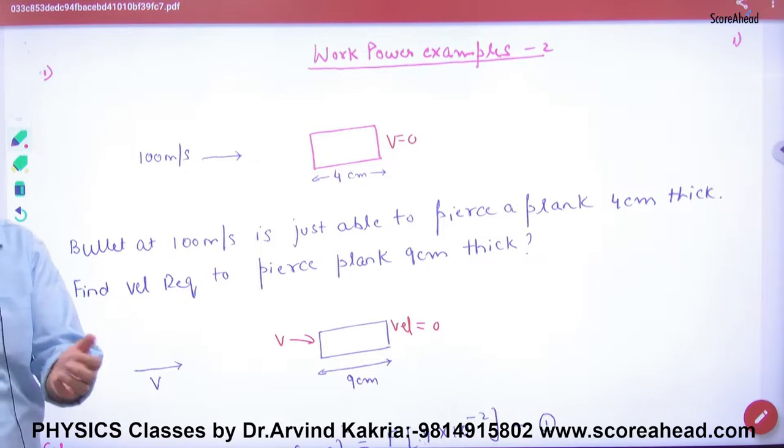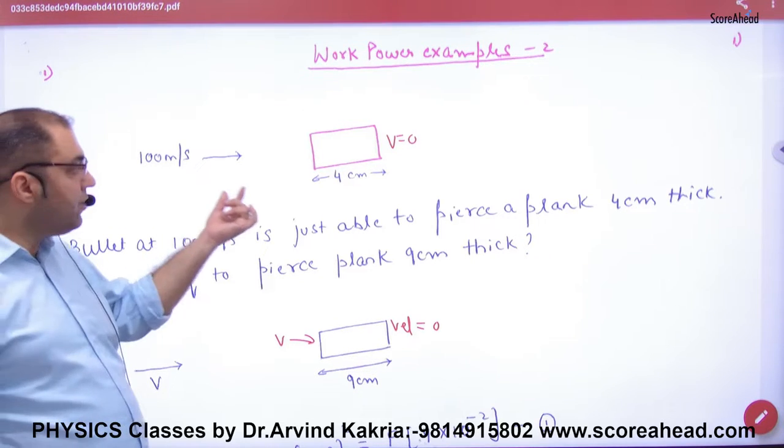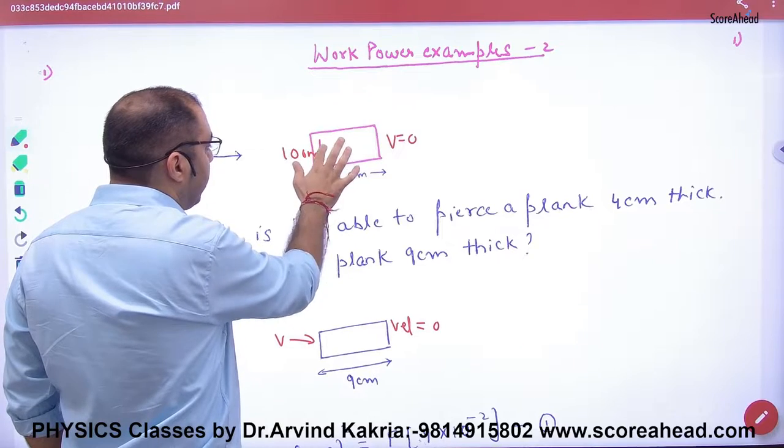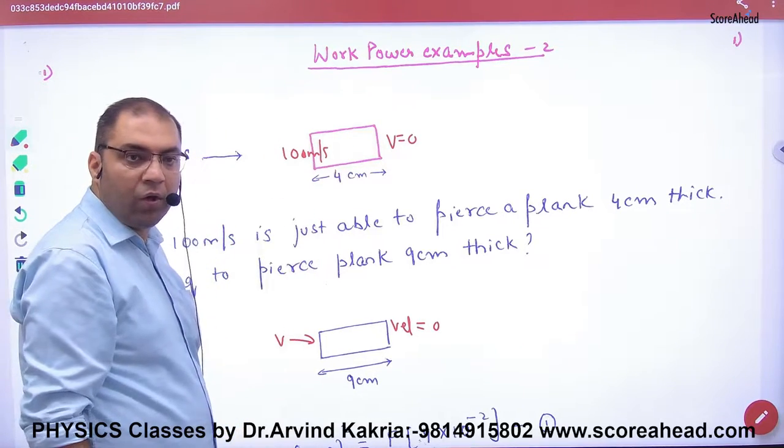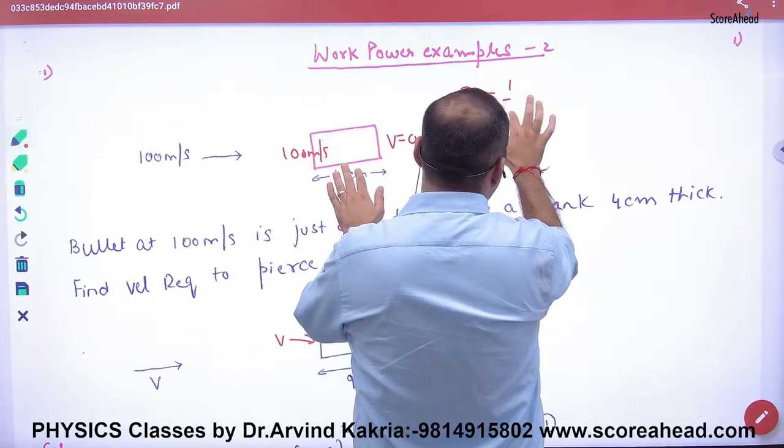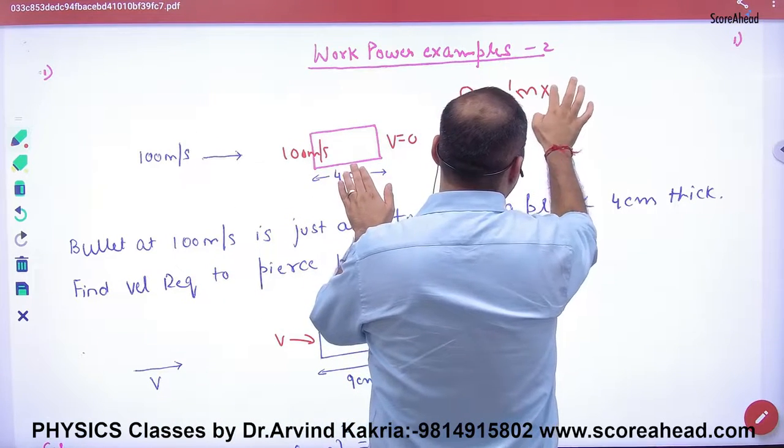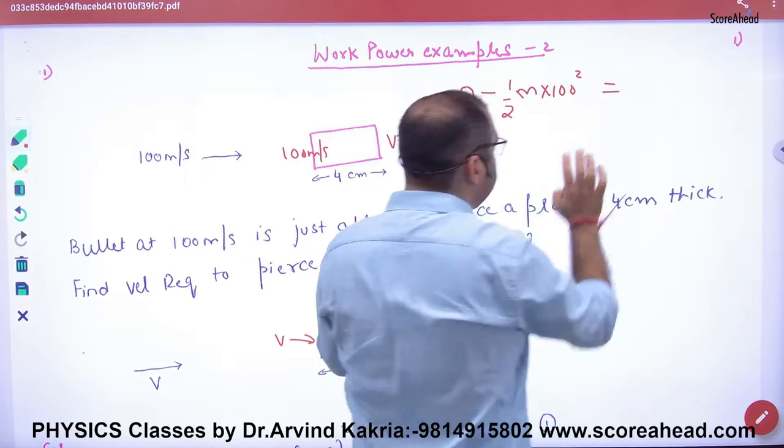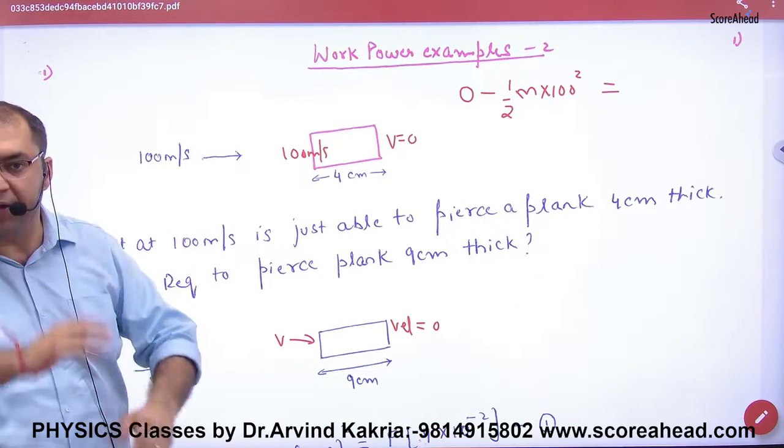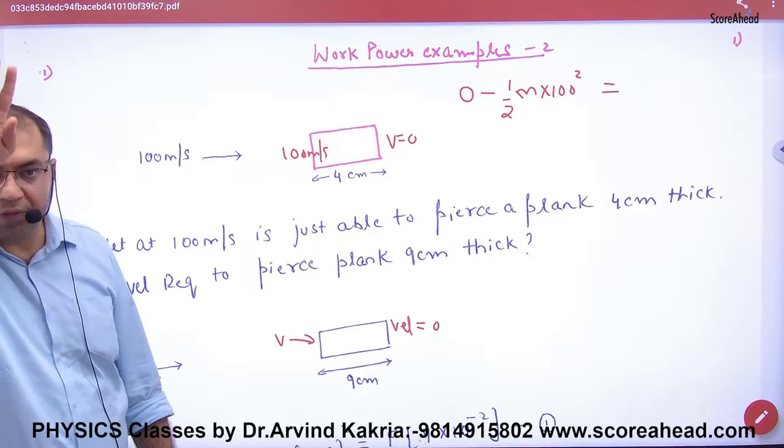So this type of problem, the solving trick is: there is a change in kinetic energy. The bullet entered at 100 meters per second and the final velocity is 0. So the change in kinetic energy: final energy minus initial energy. This is change in kinetic energy, final kinetic energy minus initial kinetic energy, clear here?